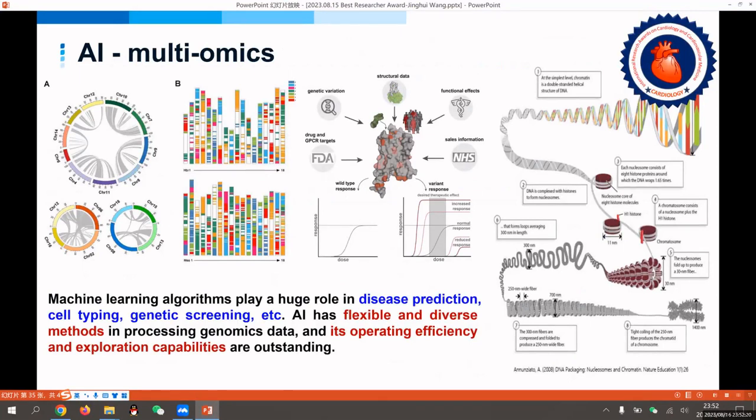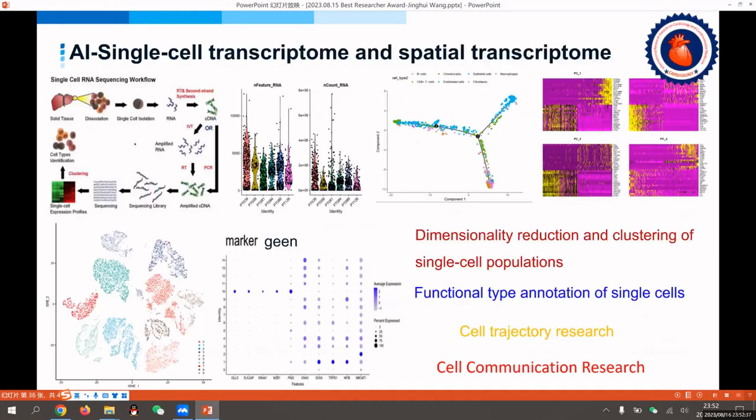Artificial intelligence algorithms can mine new data features and results from massive multi-omics data by continuously optimizing entry-specific pattern algorithms and realize the prediction of unknown data. At present, the classical research includes single-cell transcriptome analysis and single-cell spatial transcriptome analysis.